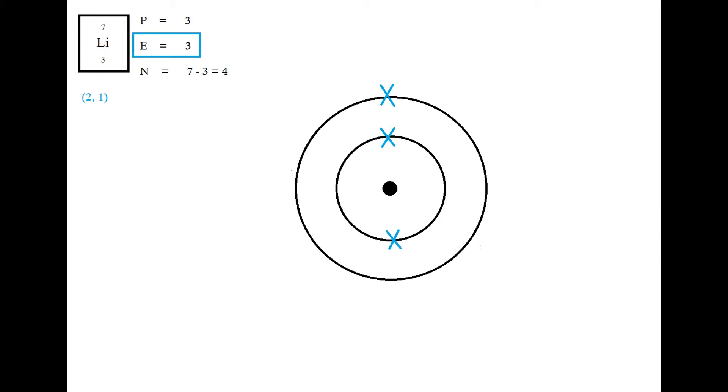Now, we're trying to do whatever is easiest, whatever the easiest way is to get a full outer shell. So the way I like to think about this is that it could either lose one electron or it could gain seven. Now, gaining seven sounds like a lot of hassle. It's going to take a lot more energy. So in this instance, this lithium atom is going to lose one electron.